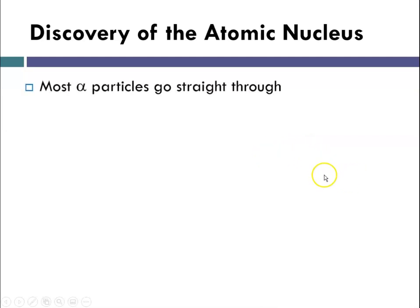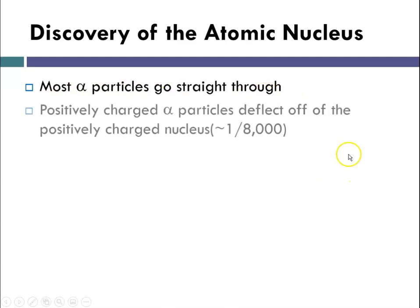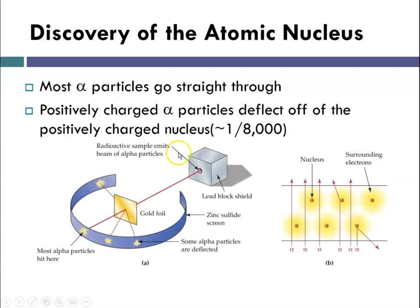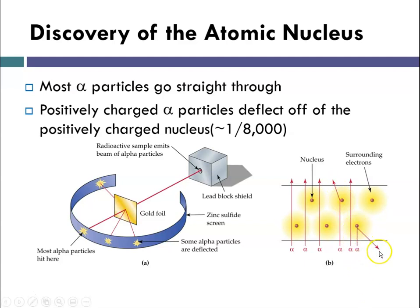As the video showed, most of the alpha particles go straight through. They are positively charged alpha particles being deflected off of the nucleus. If they're far enough from the nucleus, they are not deflected. But as they get close to the nucleus, their positive charge is going to be deflected by the positive nucleus. And if it's a direct hit, they're going to bounce back.